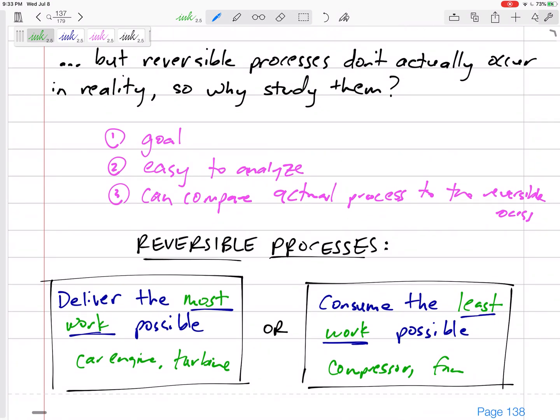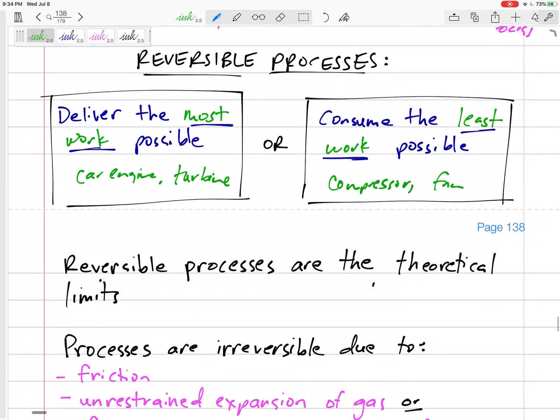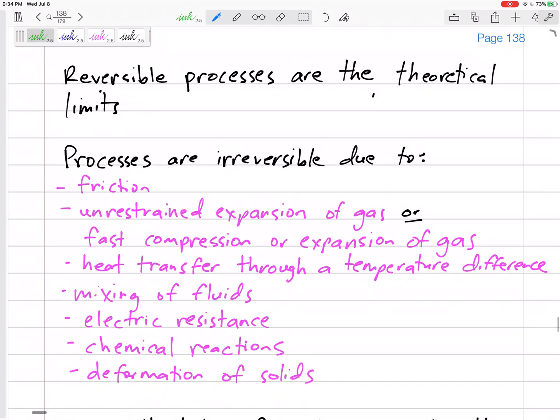Reversible processes are the ones that are the best, the ideal. They'll give you the most work if that's what you're wanting, or they'll consume the least work if it's that type of process. Reversible processes are the theoretical limits. I like to call it the unreachable goal.